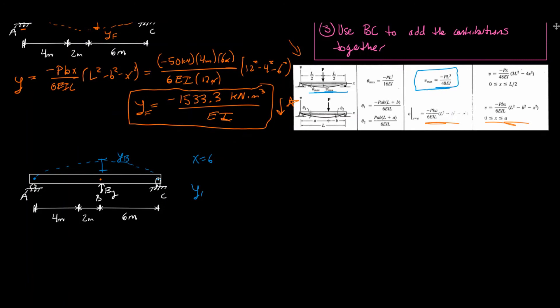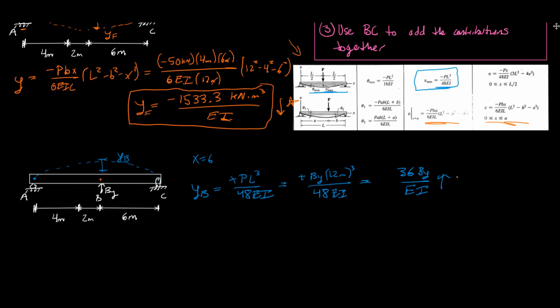We get Y_B equal to positive BY times L³ over 48EI — positive because this force is going upward. Plugging in L equals 12 meters: BY times 12³ over 48EI, which simplifies to 36·BY over EI. This is the deflection contribution due to the redundant support force BY.